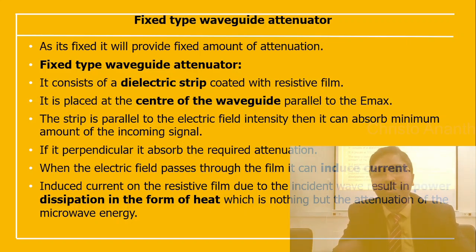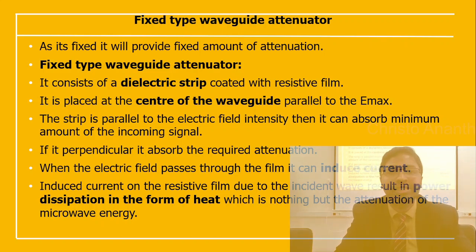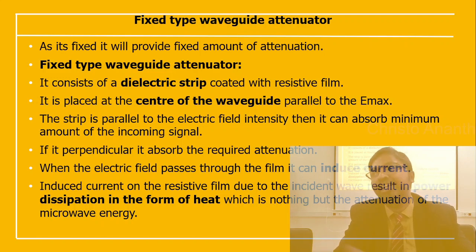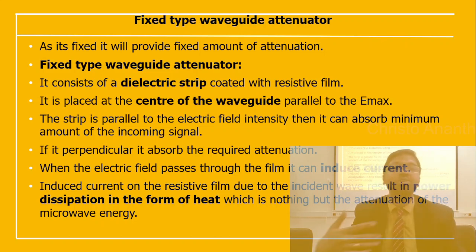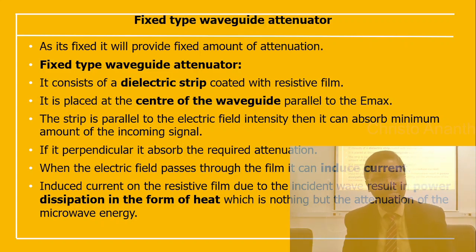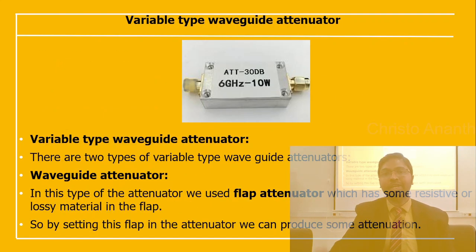The fixed type waveguide attenuator uses a dielectric strip coated with a resistive film, placed in the center of the waveguide parallel to the electric field. When parallel to the E-field, it absorbs a minimum amount; when perpendicular, it absorbs the required attenuation. The incident wave induces a current on the resistive film, resulting in power dissipation — typically as heat — which constitutes the attenuation of the microwave energy.